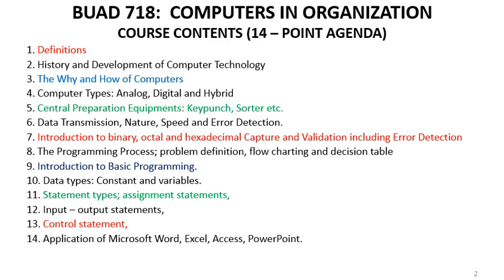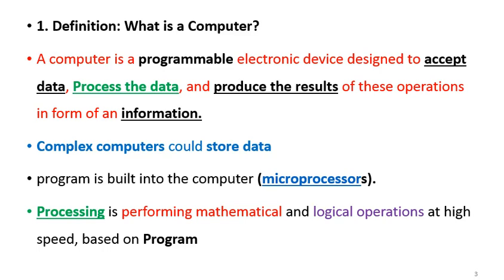This course has content with 14 items, which I call a 14-point agenda. As you can see, it starts from definitions of computer and other related things. It moves to the second item, which is the history of the computer and how it developed. And up to the level of application of Microsoft Word, Excel, and PowerPoint. Let us go straight to the first item of our content, which is definition.